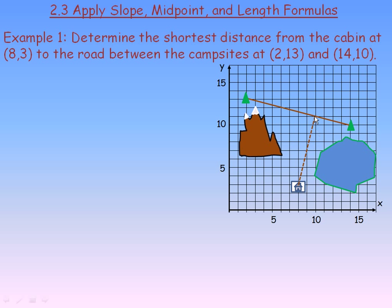Now, in order to find how long this road is, we need to find really where this line and this line intersect, and then find the distance from (8,3) to that intersection point. So the first thing that we need to do is find out an equation for this line between these campsites at (2,13) and (14,10). In order to do that, we first need to find the slope of that line.